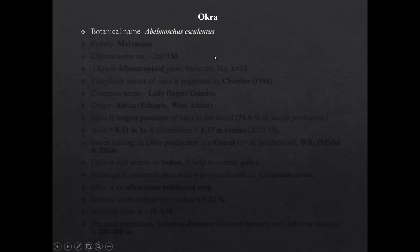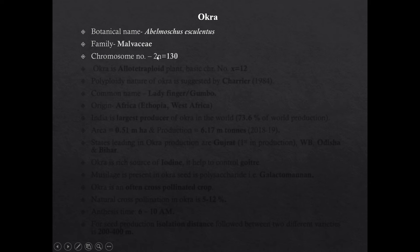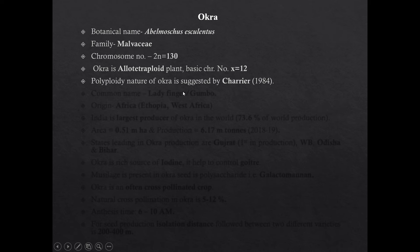Okra botanical name is Abelmoschus esculentus. Family of Okra is Malvaceae. Chromosome number of Okra is 2n equal to 130. Okra is an allopolyploid plant having basic chromosome number x equal to 12. The polyploidy nature of Okra was suggested by Carver in 1984.